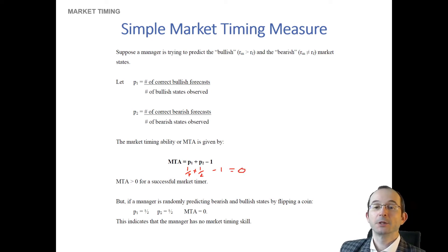So the coin flip manager would not have market timing. However, a manager that might have an edge, for example, in calling bull markets, and perhaps no edge in calling bear markets, might have then P1 greater than one half. And if they are at least no worse than a coin flip in calling bear markets, then their market timing ability measure would be a little bit greater than one. And the more accurate they were in calling one or the other, the greater it would be. So this is sort of a simple way to measure market timing.